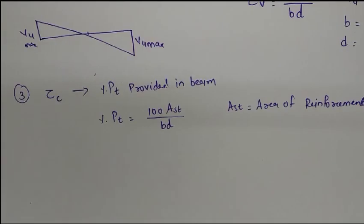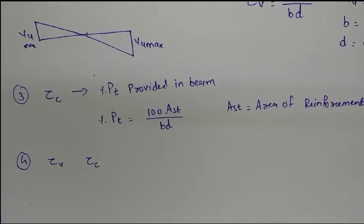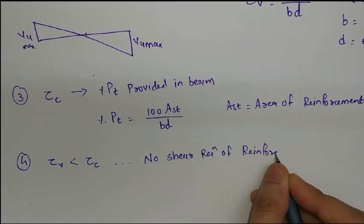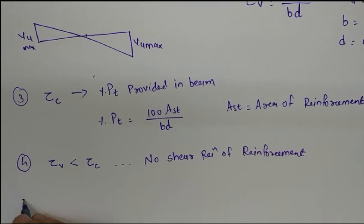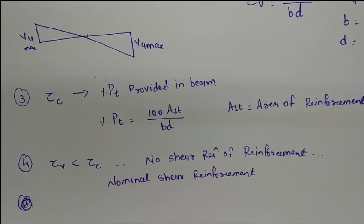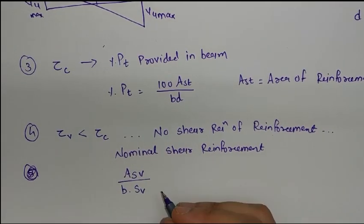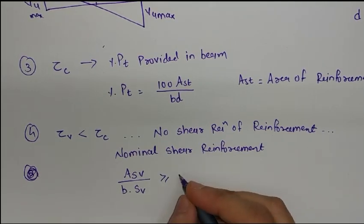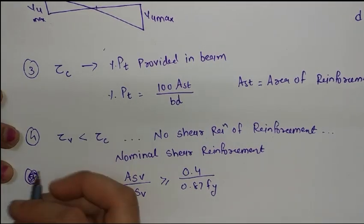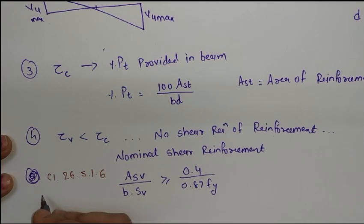Step four is to compare τv and τc. If τv is less than τc, then there is no requirement for shear reinforcement. However, we can still provide nominal shear reinforcement. The formula for nominal shear reinforcement is: ASV upon (B × SV) ≥ 0.4 / (0.87 × FY). This formula is from clause 26.5.1.6 of IS 456:2000.